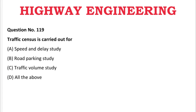Next question: Traffic census is carried out for — A: speed and delay study, B: road parking study, C: traffic volume study, D: all the above. The correct answer is D, all the above.